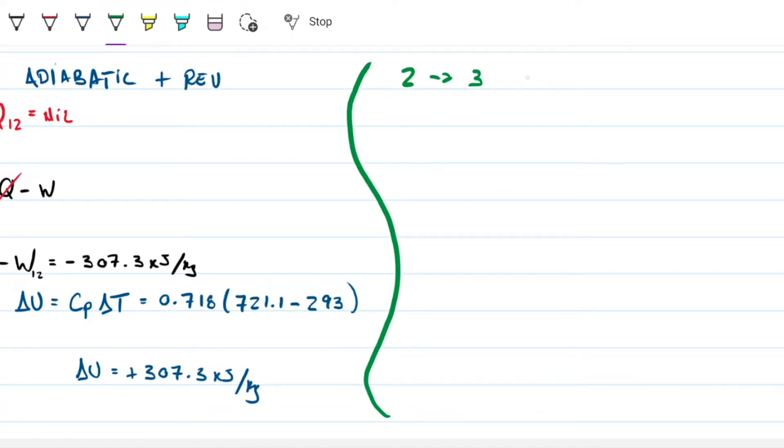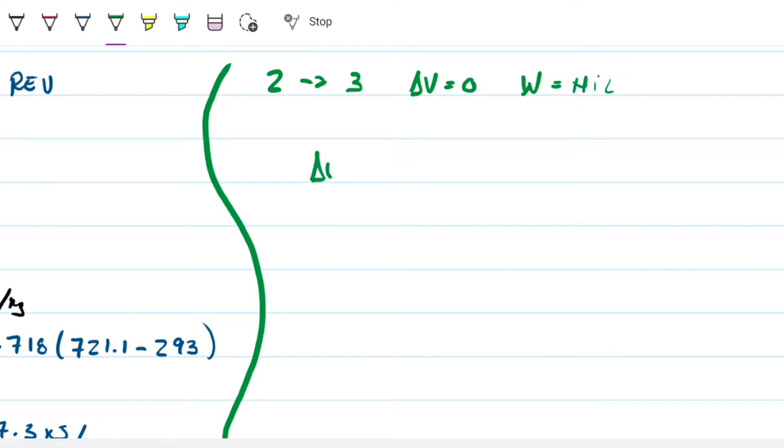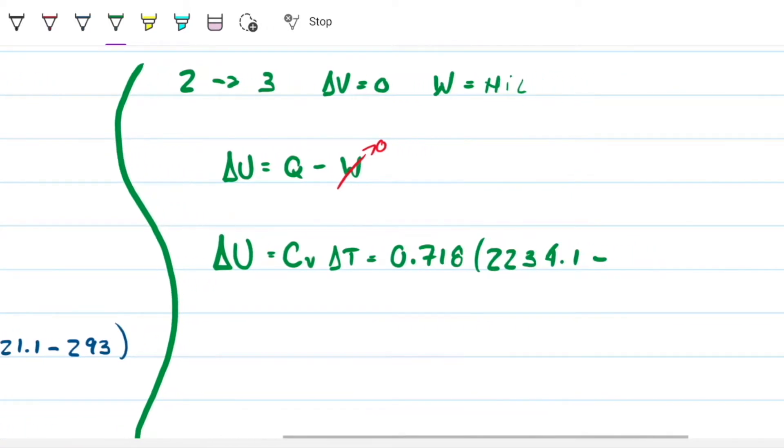2 to 3, we have isochoric, so delta V is zero. And because that is true, then we know that work is zero. Because remember, that work is just an integral from P dV, so dV is zero, so work is nil. So if that's true, then what ends up happening is that, well, if that's true, then delta U equals Q minus work. This guy is nil, so therefore, our delta U is equal to our Q. So we can do the same thing. CV delta T from 2 to 3, 0.718, and then the delta T is 2,234.1 minus 721.1. So this renders about 1,086.6.